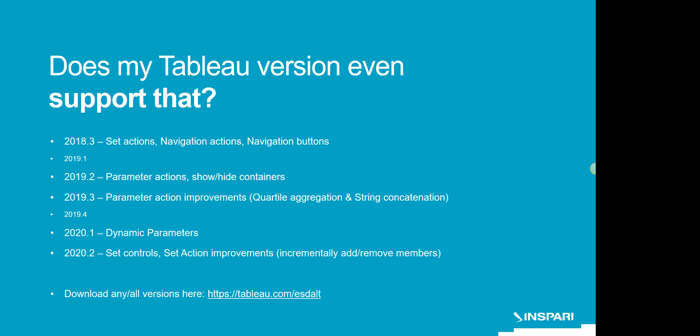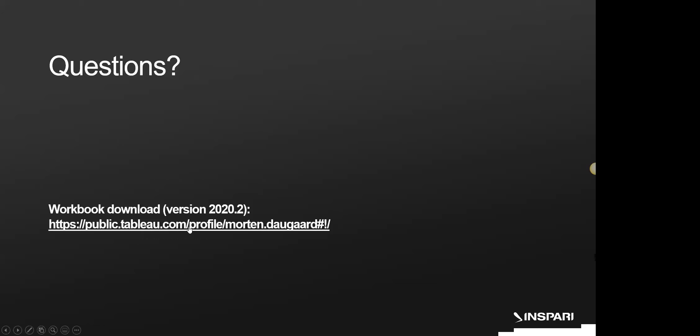The slides and key text are also included in the last dashboard of the workbook, uploaded on my Tableau Public profile. My golden rules: if you only need to select a single dimension value, use parameters. If you need to be able to reset selections, use sets. For multiple dimension selections, it can vary, and I find parameters simpler in terms of Tableau's order of operations. But I'm not afraid of sets and encourage anyone struggling with them to dig in.